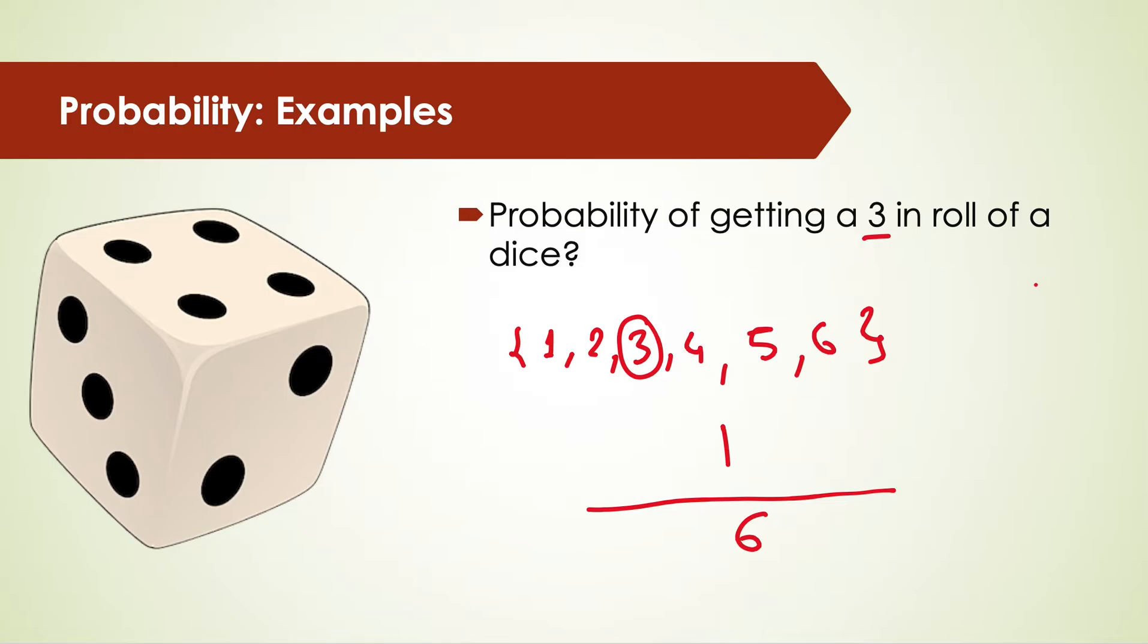Now, what is the probability of getting either three or five? In that case, we have two ways that event can happen - either it lands three or five. But total number of outcomes is still six, so in that case it will be two over six. I hope you understood what is probability. In the next video we will see what are experiments, random experiments, and random variables.